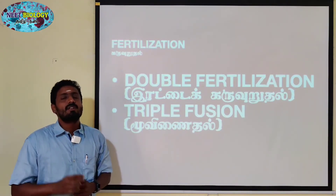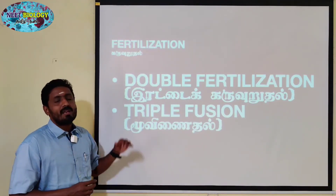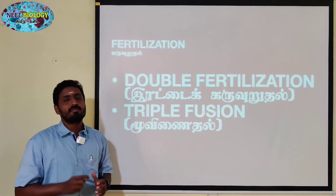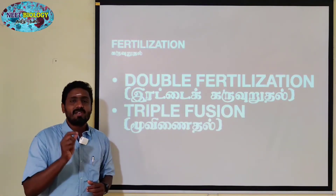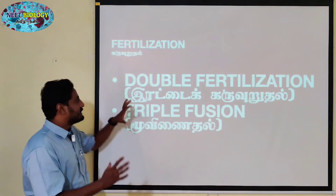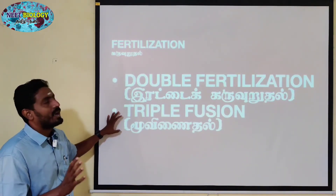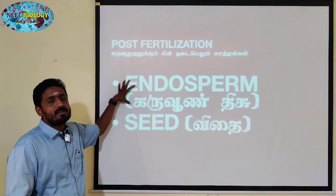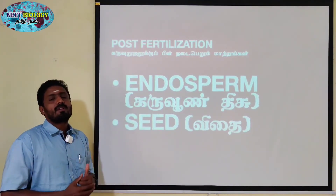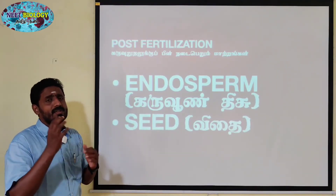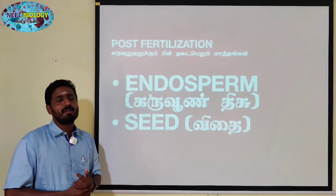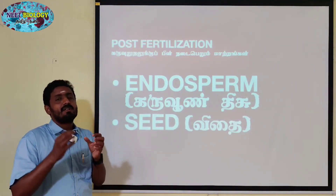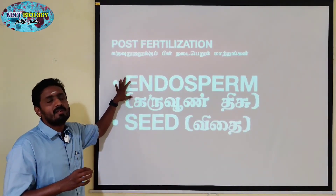One male gamete fuses with the egg cell to form the zygote. Likewise, the other male gamete fuses with the central secondary nucleus or polar nuclei to produce the primary endosperm nucleus, that is P.E.N. This is double fertilization and triple fusion. Endosperm is formed after triple fusion, and the zygote is formed after normal fertilization. The endosperm provides food materials to the growing embryo.